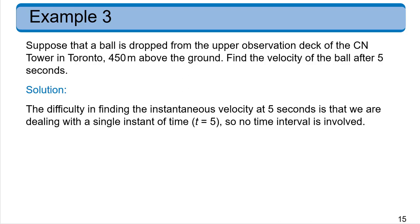So let's look at an example where a ball, something that's going to have really low wind resistance, is dropped from the observation deck of the CN Tower in Toronto, which is 450 meters above the ground. We want to find the velocity of the ball after five seconds. So we're looking for instantaneous velocity at five seconds, which is really difficult to just think of calculating directly because there's no time. Instantaneous velocity means that it happened at five seconds, but there's no duration. There's no time interval.